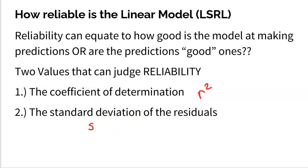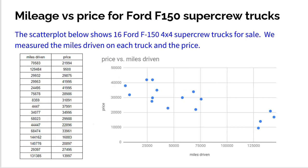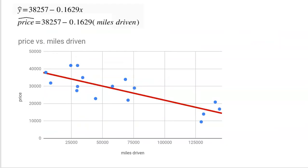Let's talk about this through an example. We have 16 Ford F-150s — we look at the miles of each truck and the price of each truck, and we notice a strong, negative, pretty linear trend: as the miles on a truck go up, the used price of that truck goes down. We've already put a least squares regression line through this data, and that formula is right here. So now the question is: is this line a reliable line? Does it make good predictions?